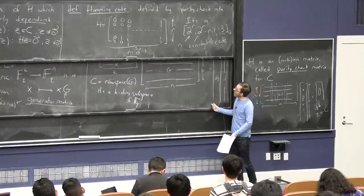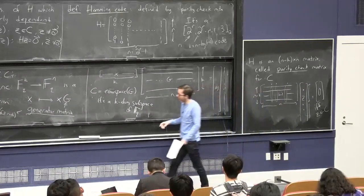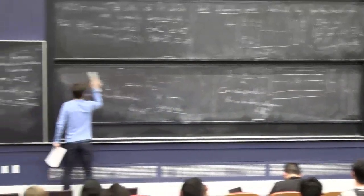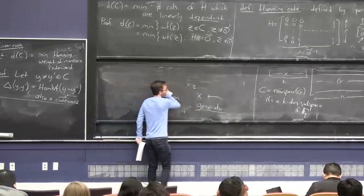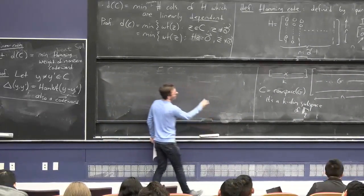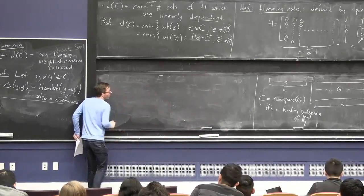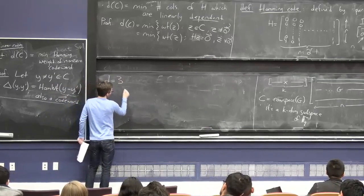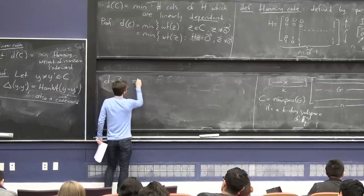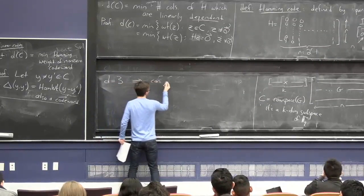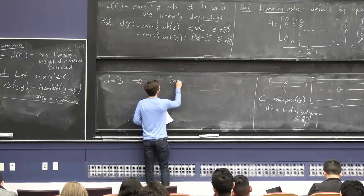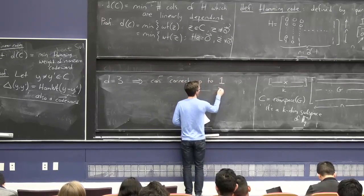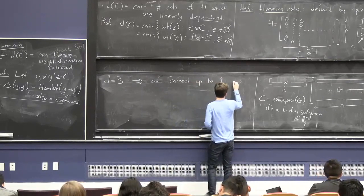And this is sort of a nice code in some senses. So one nice thing about it is its rate is great. K is very close to n. And if you're trying to encode binary string of length K, the number of additional symbols you add is basically like log K, which is very small.